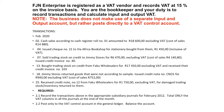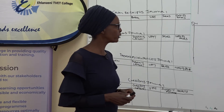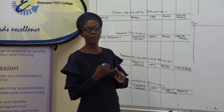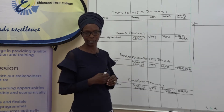Let's go to the transactions of FJ Enterprises. The transactions are for February 2020. On the 2nd of February, cash sales according to cash register roll number 01 amounted to R18,600 excluding VAT. As we are selling goods for cash, the business is receiving money, so it must be entered in our cash receipt journal. The amount is exclusive.